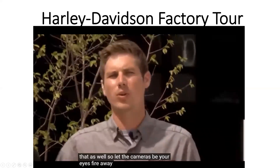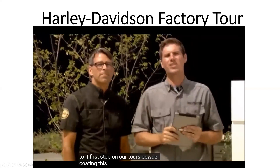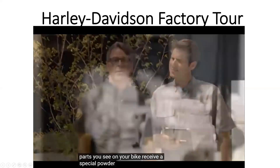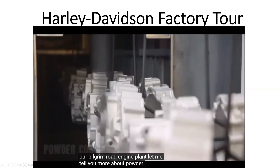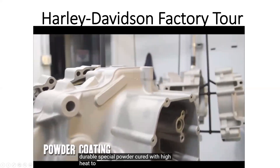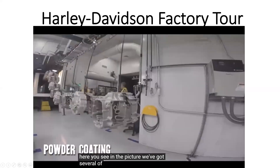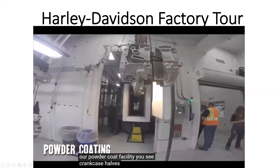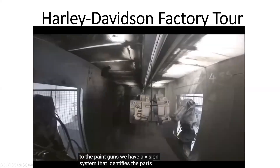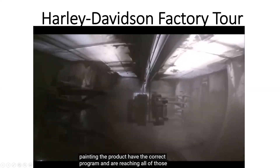So let the cameras be your eyes, fire away with questions, and we'll do our best to answer as many as we can. First stop on our tour is powder coating — this is our first major step in manufacturing the Milwaukee 8 engine. Most of the aluminum parts you see on your bike receive a special powder coating finish here at our Pilgrim Road engine plant. Powder coating is an environmentally friendly finishing process that replaces wet paint with a durable, special powder cured with high heat. Here you can see several parts traveling through our powder coat facility — crankcase halves are hung on precision hooks, and a vision system identifies the parts as they come into the booth and makes sure the paint guns have the correct program.